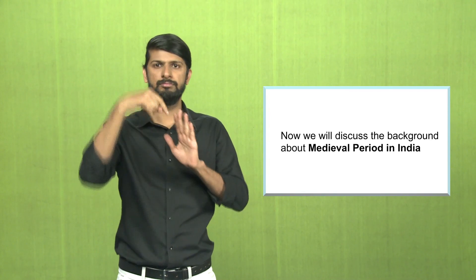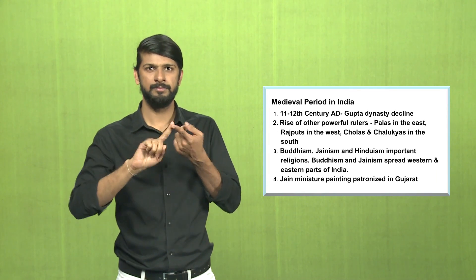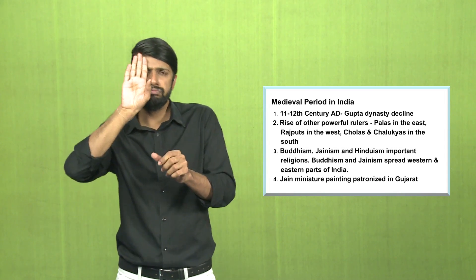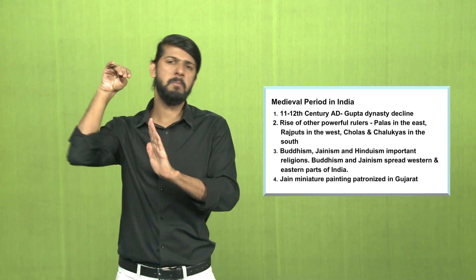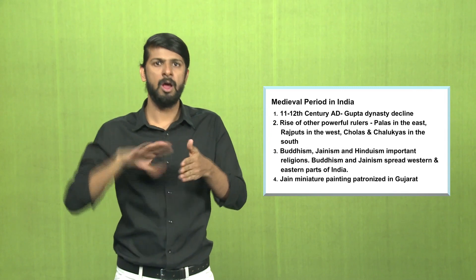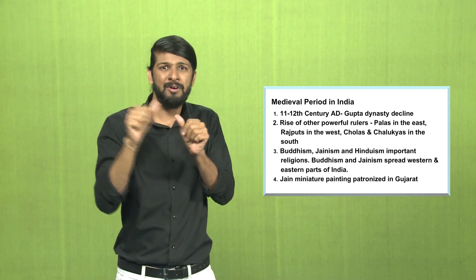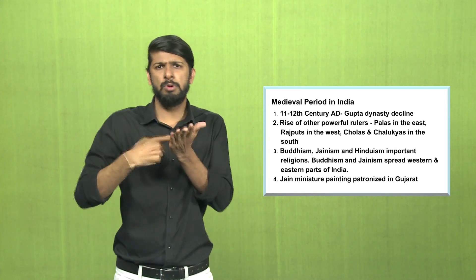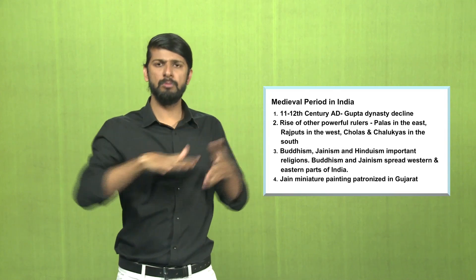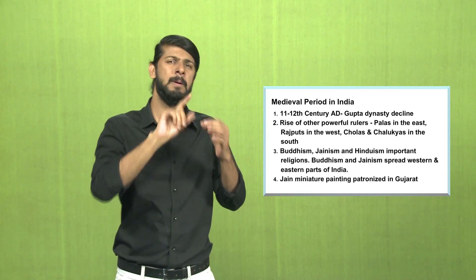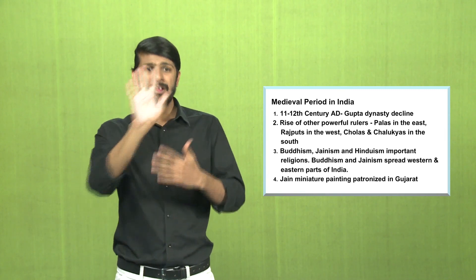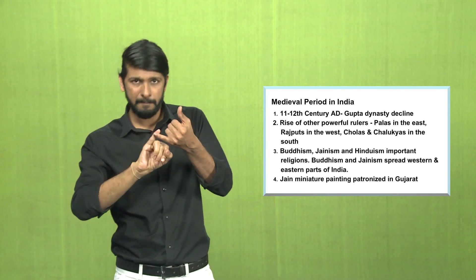Now we will discuss the background about the Medieval Period in India. During the 11th and 12th century, the Gupta dynasty was on a decline. Along the decline of the Gupta dynasty, there was a rise of other powerful rulers, primarily the Palas in the east, which was Bengal and the adjoining areas. In the west were the Rajputs, and in the south were two dynasties, namely the Cholas and the Chalukyas.